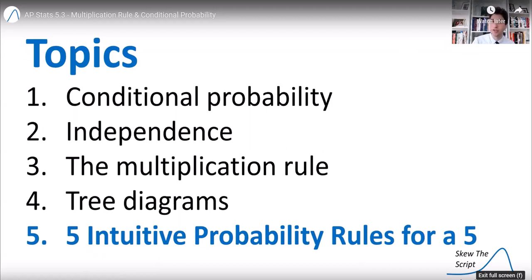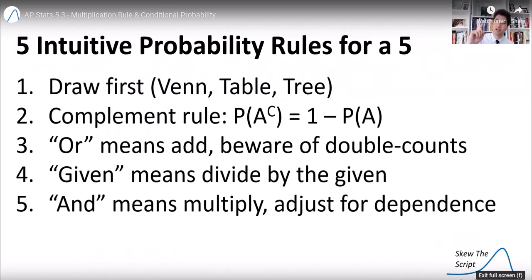So to summarize what we talked about so far, here are my five intuitive probability rules to get a five on the AP stats exam. Number one, if no diagram or drawing is given, draw one for yourself. That could be a Venn diagram. It could be a two-way table. It could be a tree diagram. Whatever the situation calls for, draw one. And that will help your thinking going into trying to solve the problem.